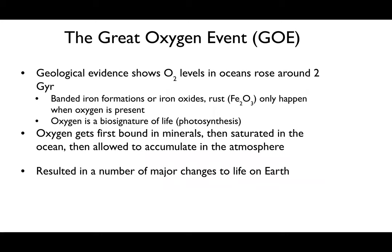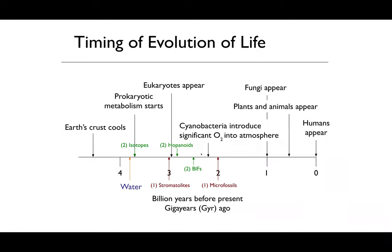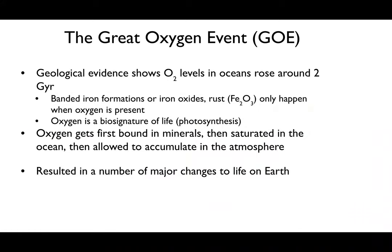Looking at the timeline, we see oxygen appearing alongside microfossils and banded iron formations. Banded iron formations only form when oxygen is present, and oxygen itself is a biosignature of life. Without life, there is no oxygen—so when NASA searches for life on other planets, the first thing they look for is oxygen in the atmosphere. Oxygen first gets bound to minerals, then saturates the ocean, and finally accumulates in the atmosphere.